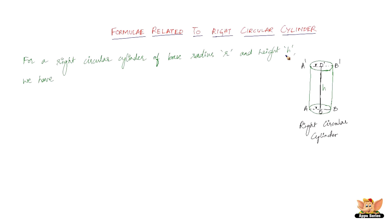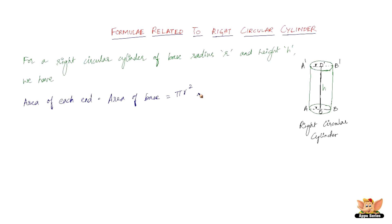For a right circular cylinder of base radius R and height H, the area of each end — or the area of the base — is pretty straightforward. It's just πR², because it's a circular shape and the area of a circle is πR². So the area of each end is πR² square units — very simple.